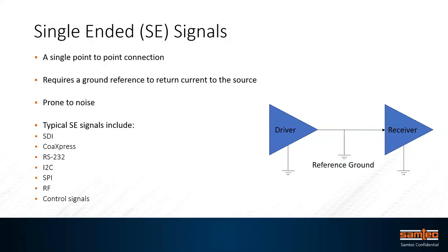We also look at what type of signals we have. There are single-ended signals and differential signals. Single-ended signals require a ground reference to return current to the source and are prone to noise. Single-ended signals are very prevalent in embedded designs and standard protocols across the embedded ecosystem: SDI, Coax Express, RS-232, I2C, SPI, RF, and control signals all take advantage of single-ended solutions.